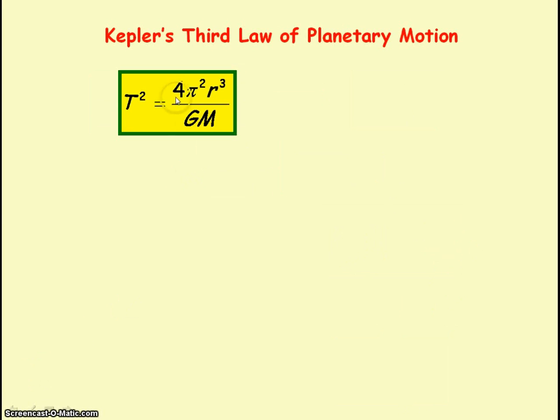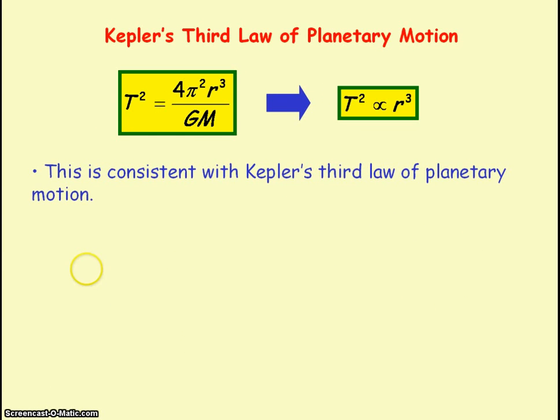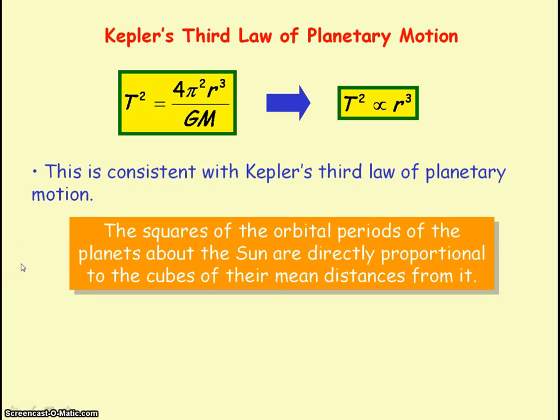As 4π squared, G, and M are constants, then we can see that t squared is directly proportional to r cubed for planets. And this is consistent with Kepler's third law of planetary motion, which states that the squares of the orbital periods of the planets about the sun are directly proportional to the cubes of their mean distances that the planets are from the sun.